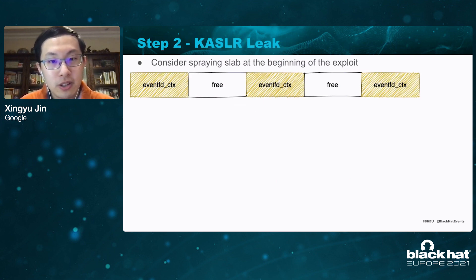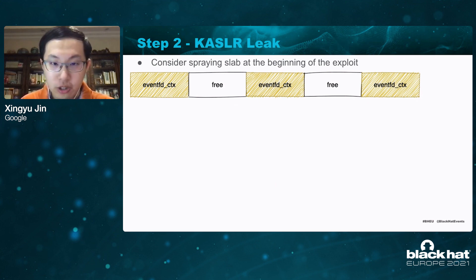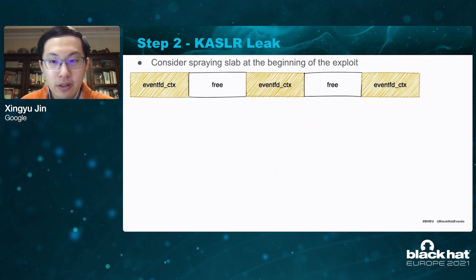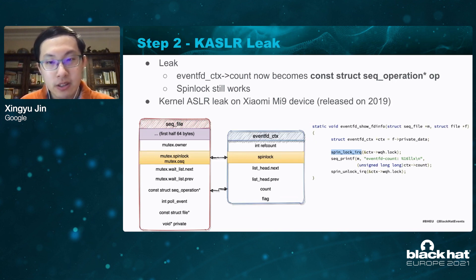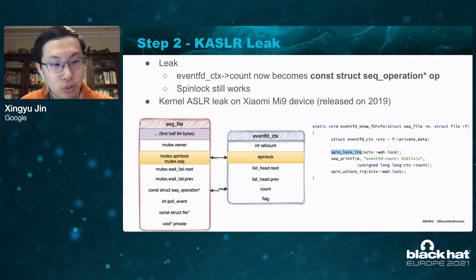To defeat kernel ASLR, we consider seeding the slab at the beginning of the exploit by opening /proc/cpuinfo and asking the kernel to allocate many sequence file structures. Because of the double free, these sequence file structures are likely to overlap each other. The overlap between eventfd and sequence file leads to a very interesting result: the count from the eventfd now becomes a sequence operation. The spinlock from the eventfd context just works because it overlaps the spinlock from the sequence file structure, so we can easily defeat kernel ASLR.